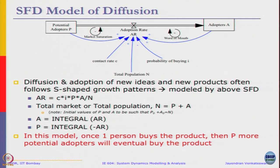The model will run until the potential adopters becomes 0 and adopters is equal to N. There is nothing stopping them or preventing them from stopping halfway. Here, as soon as one person buys the product, then P more potential adopters will eventually buy the product. Now, let us see how we can use it for more real examples.